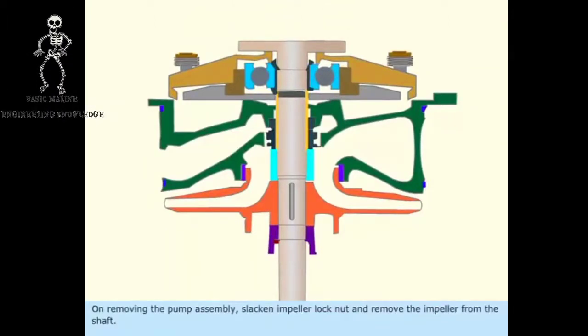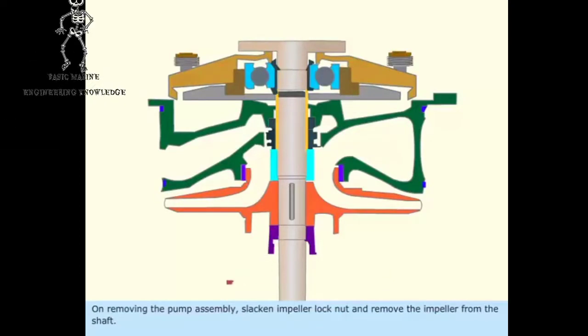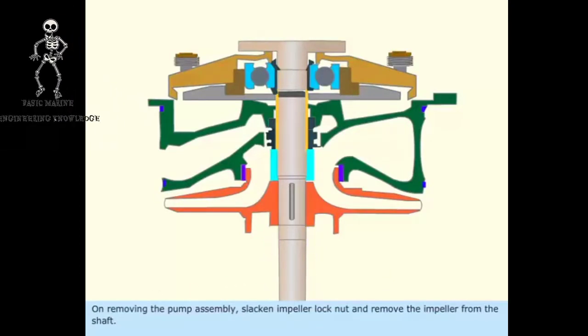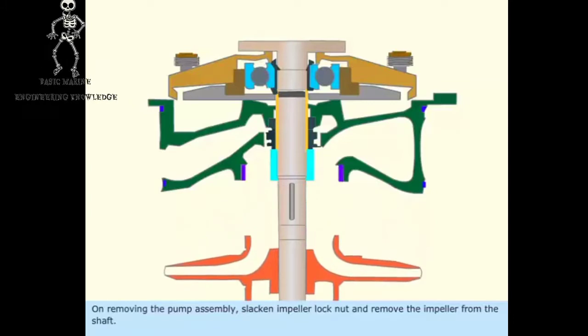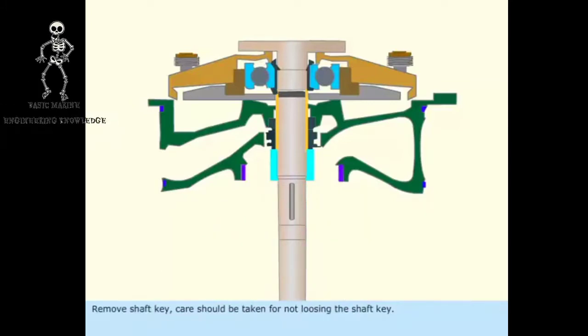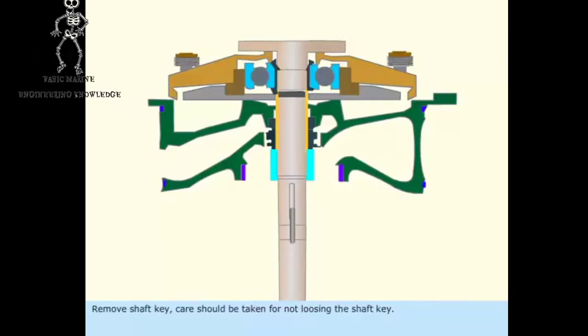On removing the pump assembly, slacken impeller lock nut and remove the impeller from the shaft. Remove shaft key. Care should be taken for not losing the shaft key.